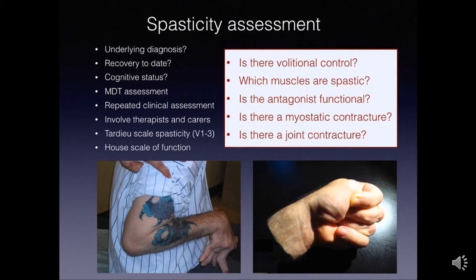When assessing focal spasticity, assess each component. For finger flexors, identify whether flexor digitorum superficialis, which flexes the metacarpophalangeal and proximal interphalangeal joints, or flexor digitorum profundus, which flexes the distal interphalangeal joint, or a combination of both is the primary driver. It is important to identify which muscle is predominantly driving the spasticity component.